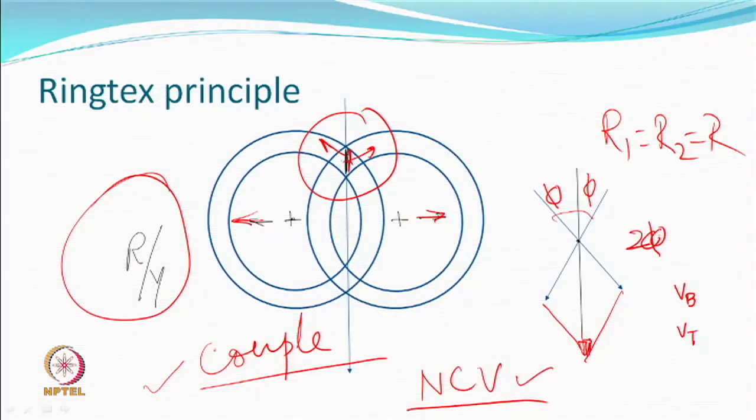Like the Beltex system, where we assumed the speed of the bottom belt and top belt are the same, here also we can assume that at any given point of interaction or contact, the speed of ring 1 is equal to the speed of ring 2, which could be R. Therefore, you can define something called an R. There is a couple being generated — you have frictional force and a couple. Whenever some rotation has to take place, there has to be some couple.